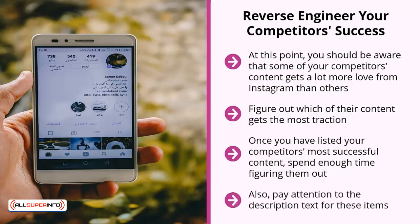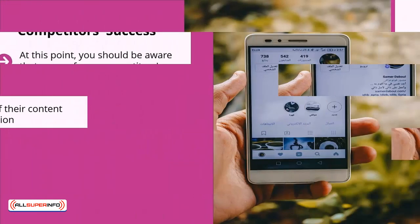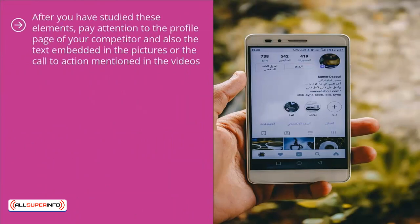Also pay attention to the description text for these items. Do you see any similarities? Can you connect the dots? Is there some bigger pattern emerging? After you have studied these elements, pay attention to the profile page of your competitor and also the text embedded in the pictures or the call to action mentioned in the videos. These relate to their sales funnel — basically they are mentioning discount codes so people viewing this content can get a discount, and they're also promoting the profile page of their website.